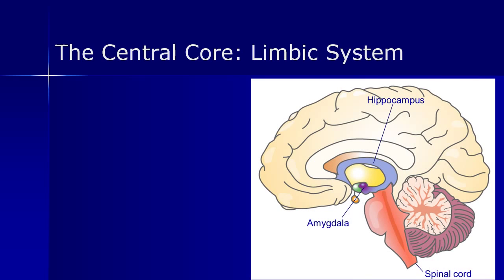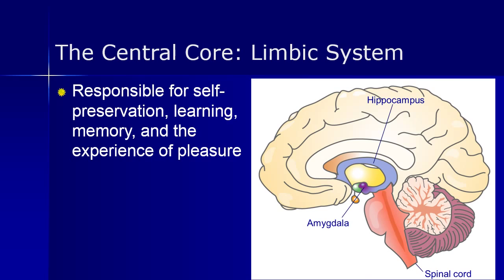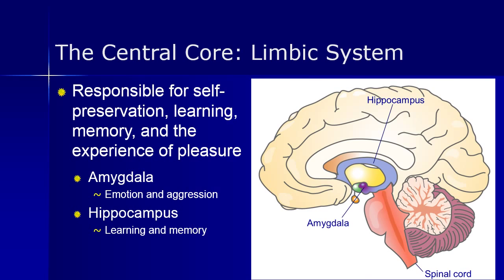Let's look at the limbic system — a fascinating part of brain functioning. It is responsible for emotions, drives, memory, learning, and our sense of smell. The amygdala is specifically responsible for emotion and aggression — a small mass of nuclei with major impact on emotional learning, consolidating information into long-term memory, and playing a role in the fight-or-flight response. The next time you get cut off by another driver and have an immediate aggressive response, you can thank your amygdala. The hippocampus is involved in the formation of new memories and with learning and emotions — damage to it can result in memory loss.